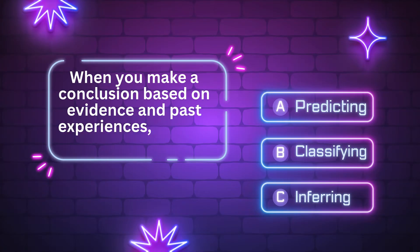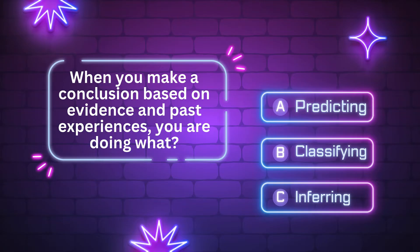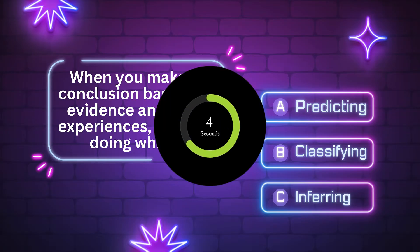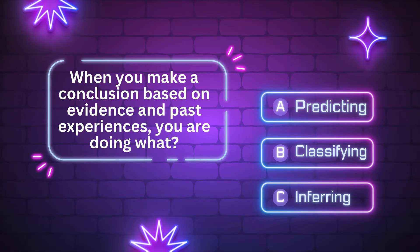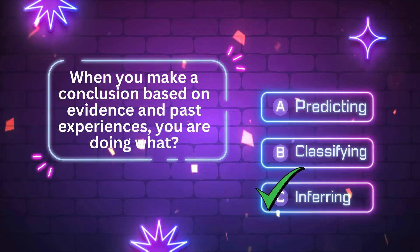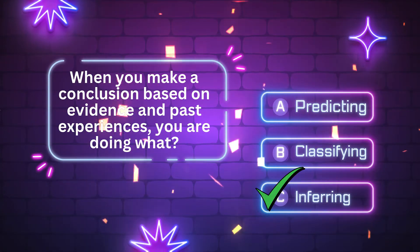When you make a conclusion based on evidence and past experiences, you are doing what? A. Predicting. B. Classifying. C. Inferring. The answer is letter C. Inferring. Good job. Let's move on to the next question.